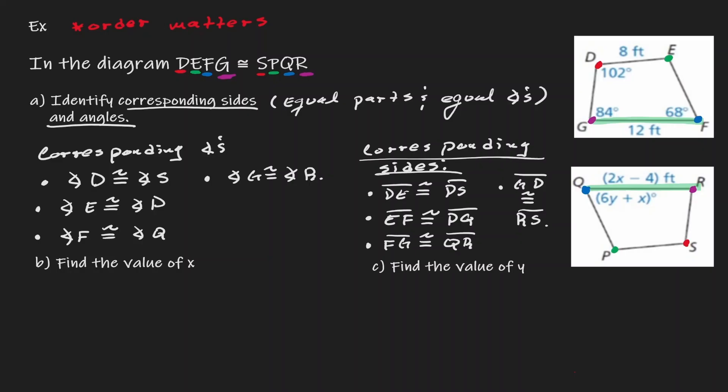So if they are congruent to each other, we can just set them equal to each other. Therefore, the expression 2X minus 4 should be equal to 12. And now this becomes an algebra 1 question.